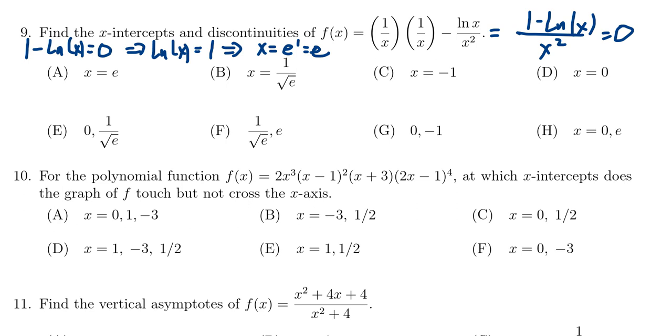We also care about what makes the denominator go to 0. So if x squared goes to 0, we can take the square root of both sides. We end up with x equals 0, like so. So we have an x-intercept at e. We're going to have a vertical asymptote at 0.